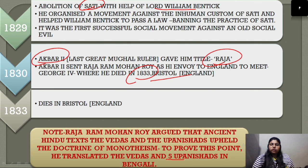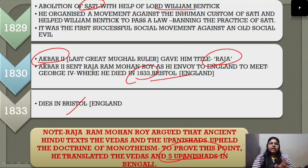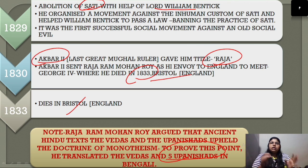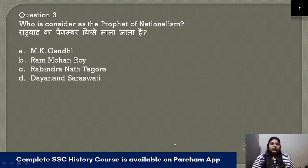To prove his points, Raja Ram Mohan Roy translated five Upanishads into Bengali. He passed away in 1833 in Bristol, England. The goal of covering all additional details about Raja Ram Mohan Roy is that students should remember all these supplementary facts for their exams.